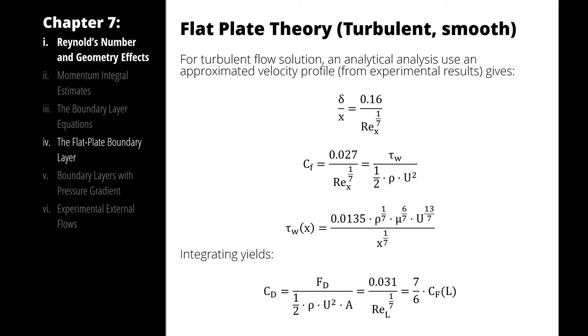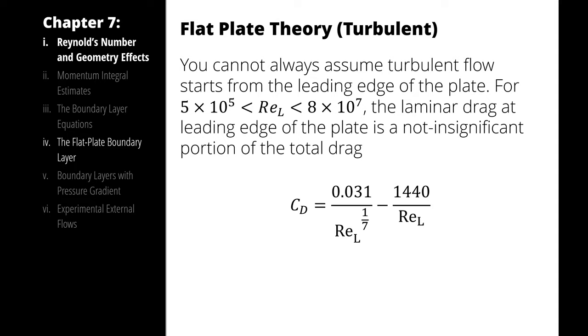For a smooth turbulent flow, we can develop another representation for the coefficient of drag. That's going to be 0.031 divided by the Reynolds number where the length of the plate is the characteristic length raised to the one-seventh power. And I will point out while we're here that this equation is only for the turbulent part of the analysis. You cannot always assume that the turbulent flow starts from the leading edge of the plate. In situations where you have developing boundary layers with laminar conditions on the very front of the plate and turbulent conditions everywhere else, we can use this relationship. This will give us the coefficient of drag that includes the laminar and turbulent part of the plate.